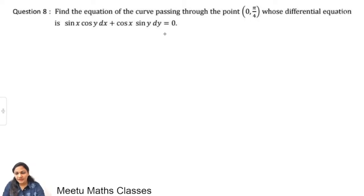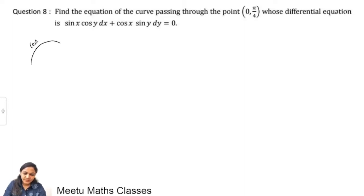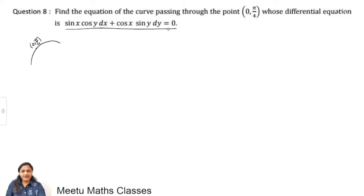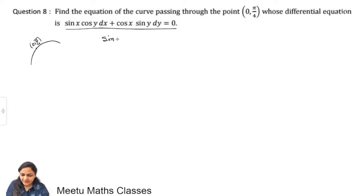Find the equation of the curve passing through the point (0, π/4). You have to find the equation of a curve which passes through (0, π/4), whose differential equation is given to you. So, first of all, from this differential equation we are going to find out its solution curve. Let the differential equation be: sin x cos y dx + cos x sin y dy = 0.